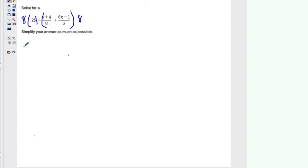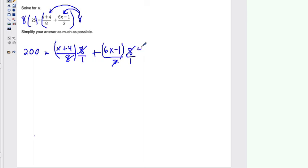So 8 times 25, that's 200. And then I'm going to distribute this 8 to both of these. So you can think of that as 8 over 1. So now I can see from this that this 8 and this 8 will cancel out. And this 8 and this 2 here, I can divide both by 2, and this gives me 1 and 4. And so you're going to have 200 equals x plus 4 plus, and then we've got to distribute this 4 here, 24x minus 4.